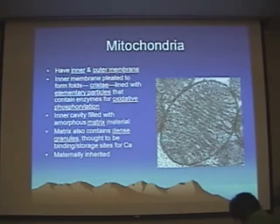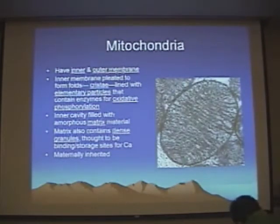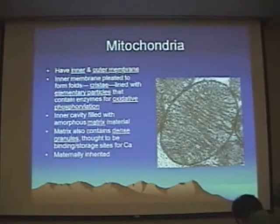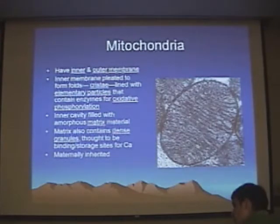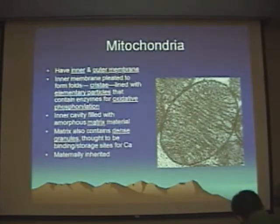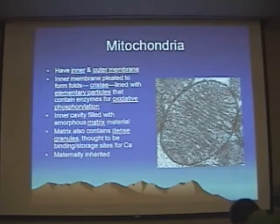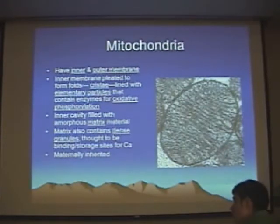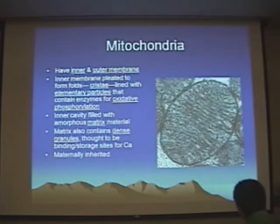Question: are the enzymes that the elementary particles contain cytochromes? Yes — the cytochromes are the enzymes of the oxidative transport chain. Are the darker spots in the area dense granules? Some of those darker spots probably do represent dense granules, but not all may.